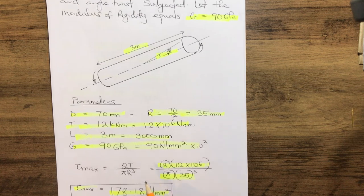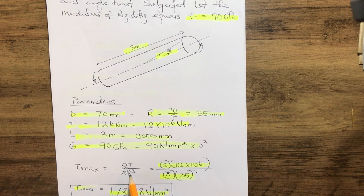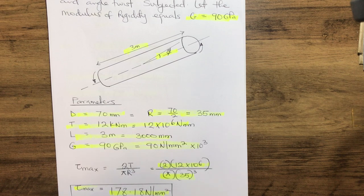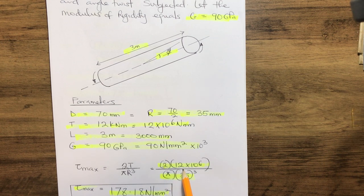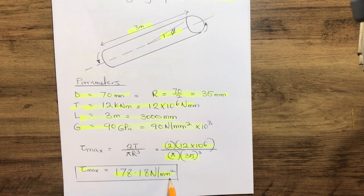Using the maximum shear stress equation: τ_max equals 2T over π multiplied by r cubed. Slotting in our parameters, we get 2 multiplied by 12 × 10^6, divided by π times 35 cubed. This gives us τ_max equal to 178.18 newton per millimeter squared.